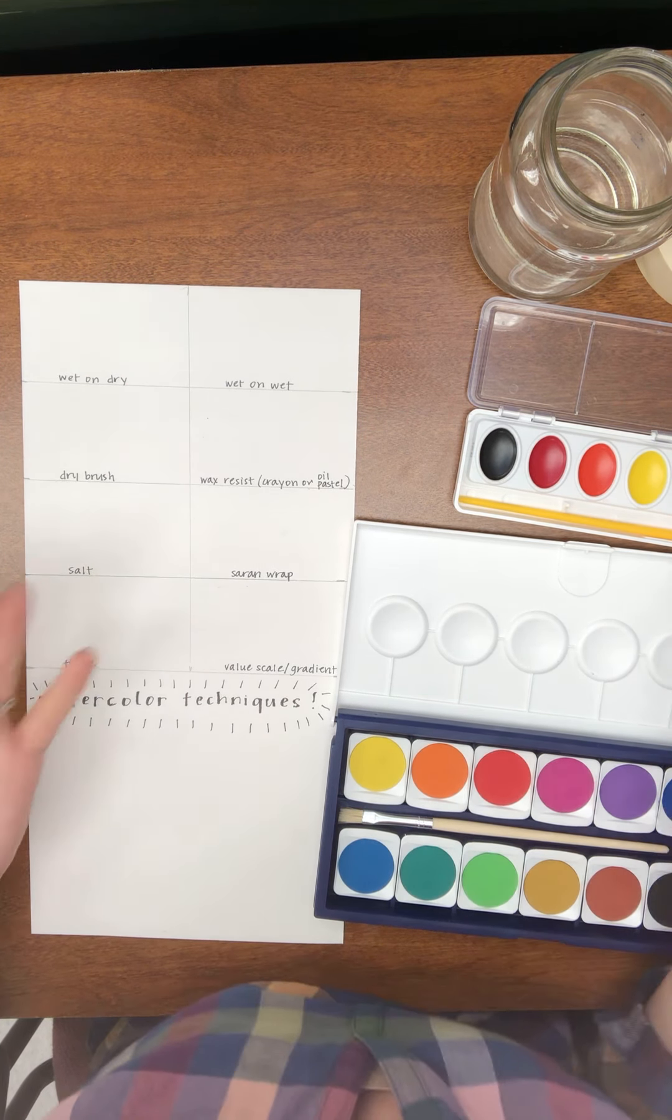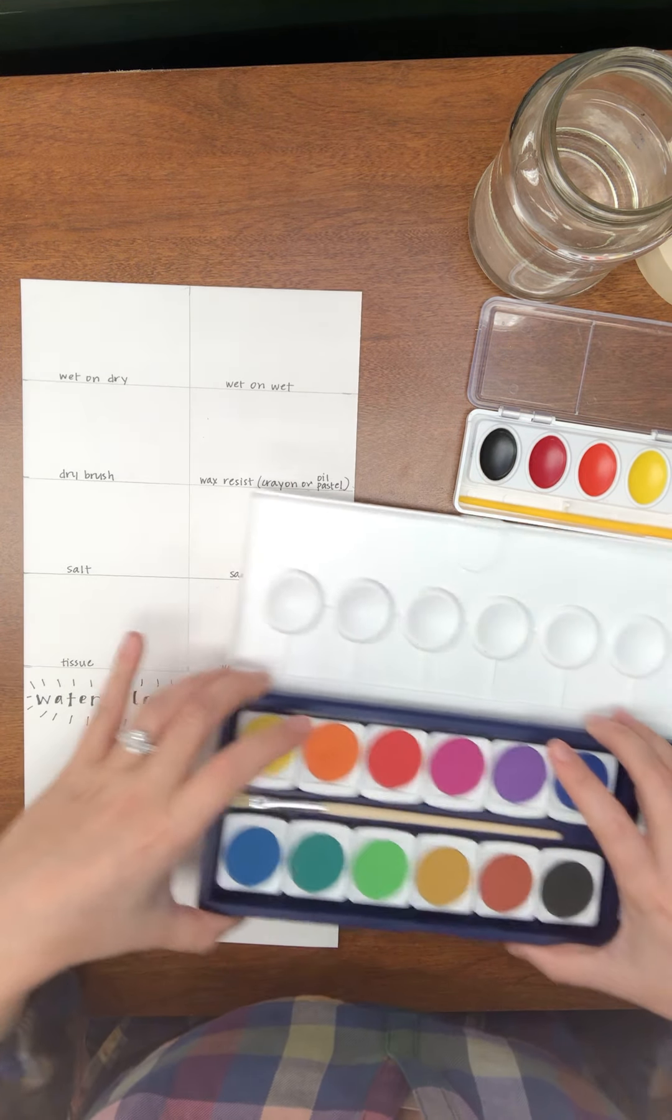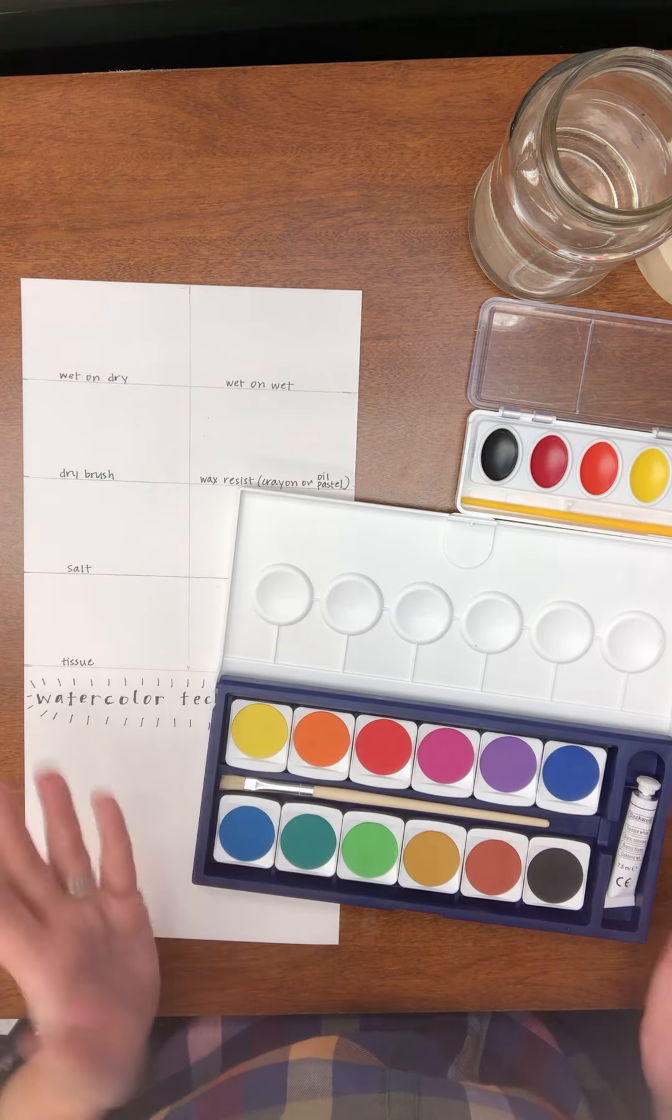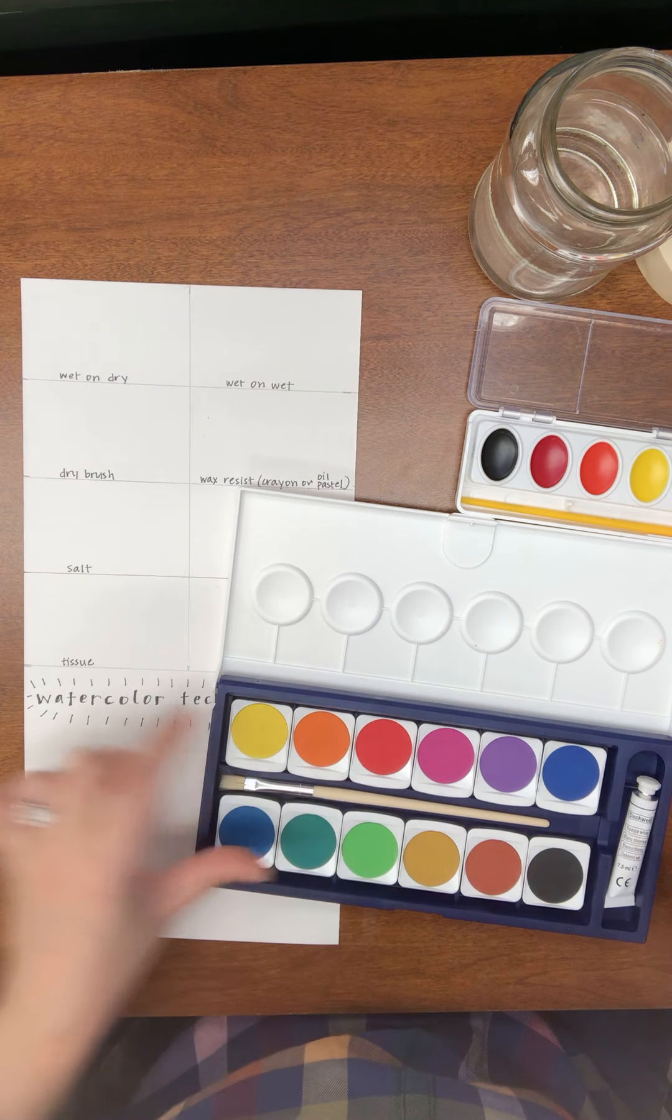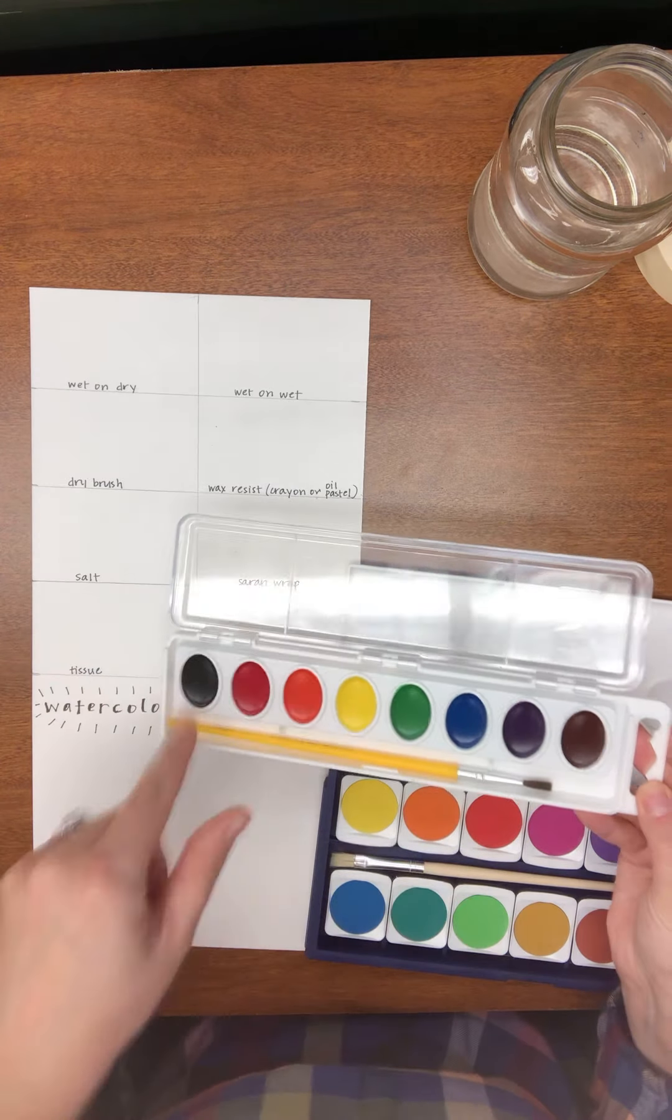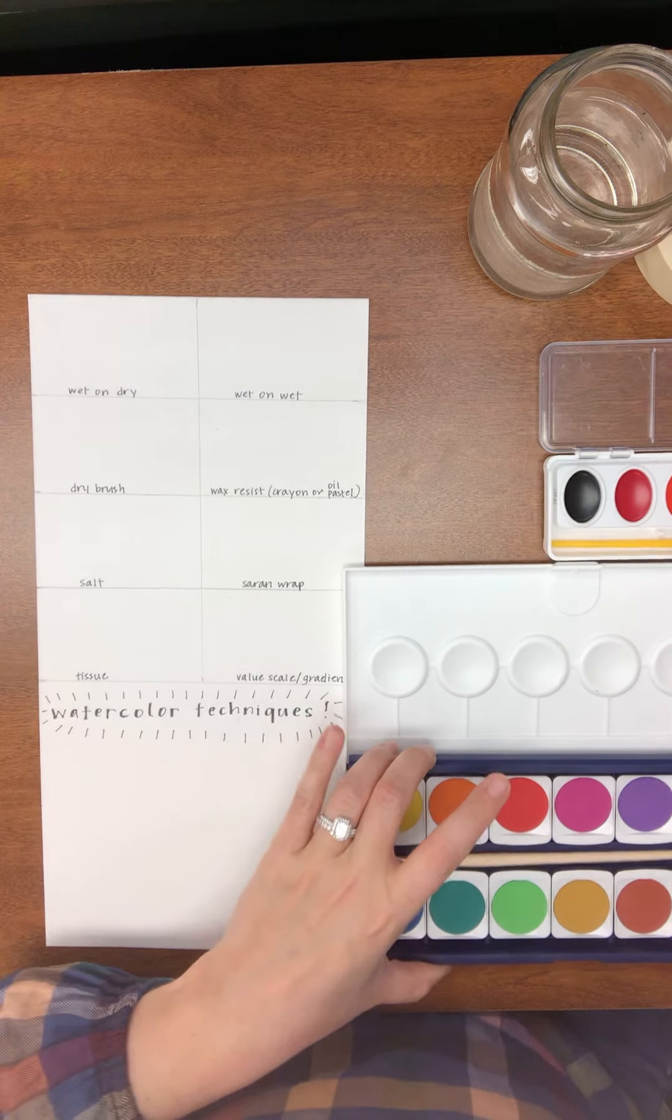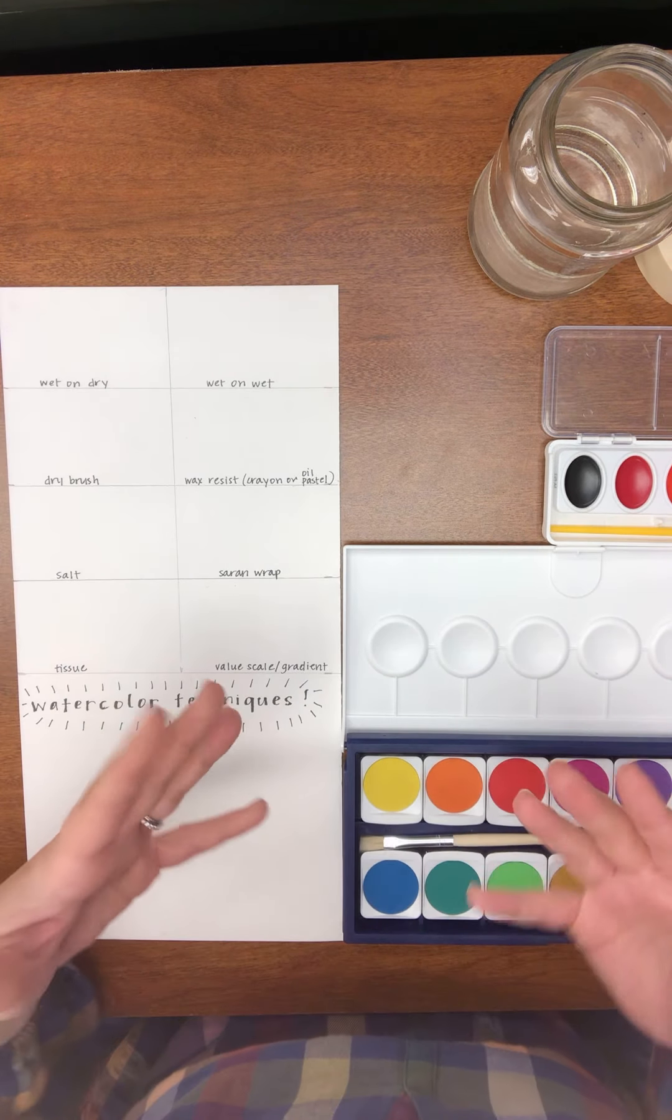I'm going to go through what you need to have in front of you first. Obviously you're going to need watercolors. I have a tray of watercolors that has 12 colors in it. You may have a set that has fewer colors that is completely fine. We can mix these to make other colors. I have both trays next to me. You only need one.